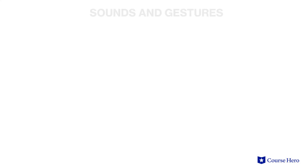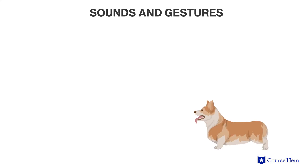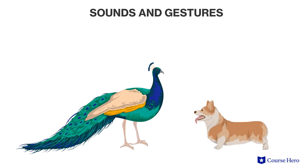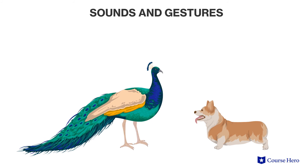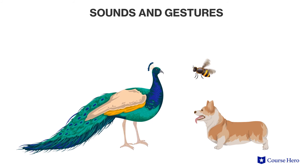A broader philosophical debate is whether or not animals have language, or anything that might approximate it. Researchers have shown that species communicate through sound and gestures — dogs can bark, peacocks display feathers to attract mates, and bees indicate to their hive mates that they have found nectar by dancing. But communication is not language.